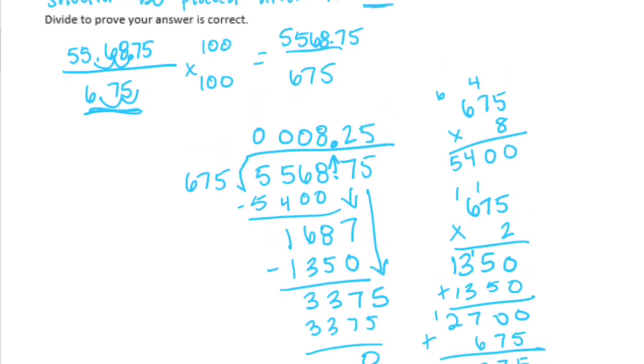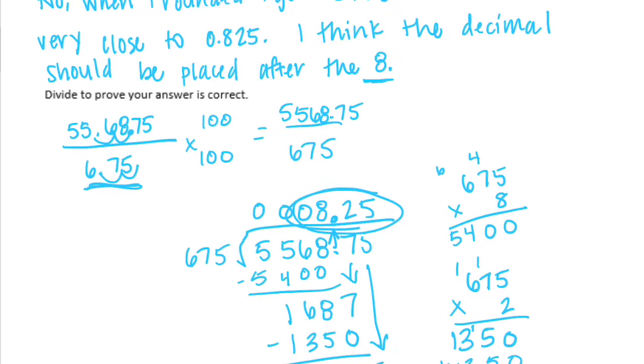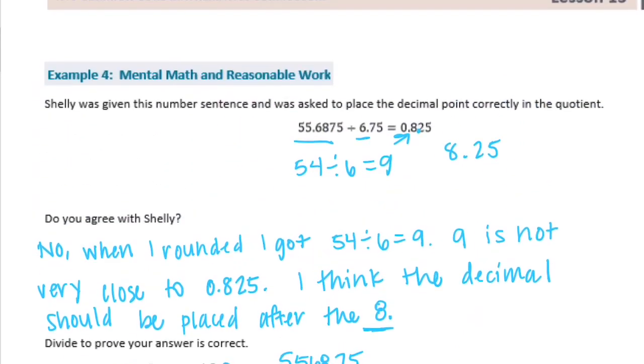No remainder. So we get 8 and 25 hundredths, which was correct. That's what our estimate should have been. And she put the decimal point in the wrong place.